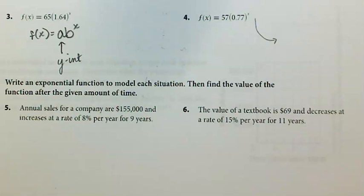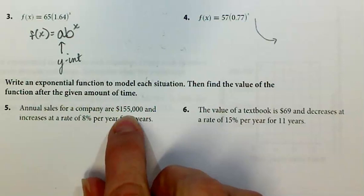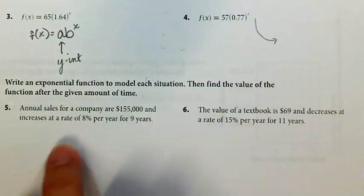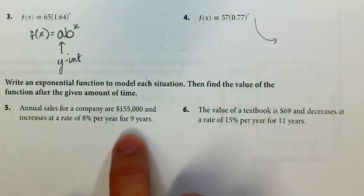Number 5 says that annual sales for a company are $155,000 and increases at a rate of 8% per year for 9 years. So at whatever time they're talking about, the starting value is $155,000 and then it increases annually at a rate of 8%. They want to know the value of the function, like how much is the annual sales after 9 years.